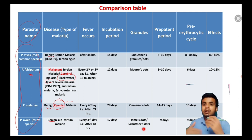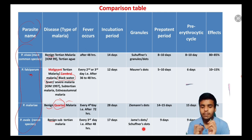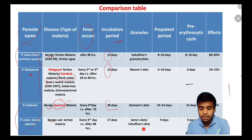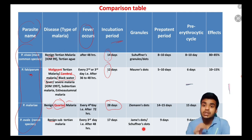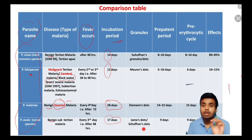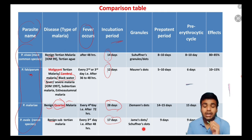For fever intervals: tertian fever repeats every 48 hours, quartan fever repeats every 72 hours. Regarding incubation periods: Plasmodium vivax is 14 days, Plasmodium falciparum is 12 days, Plasmodium malariae is 28 days - the longest incubation period. This was a question in CEE 2023. Plasmodium ovale is 17 days. Plasmodium falciparum has the lowest incubation period because it does not have an exoerythrocytic cycle.